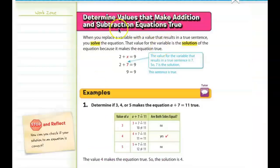First we're going to work with addition and subtraction equations and what we do to make them true. When you replace a variable with a value that makes the equation true, then you have solved the equation. So there is only one value that would replace a variable in an equation to make it true. So the example they're showing you is that 2 plus something, 2 plus X, equals 9.